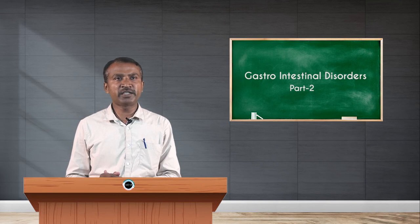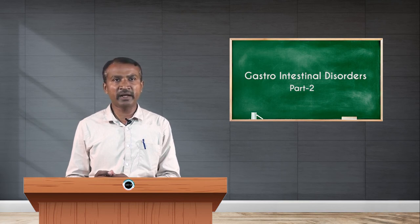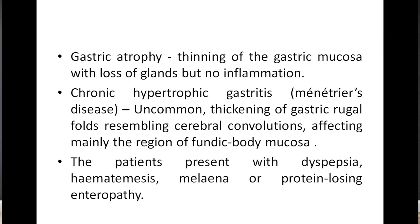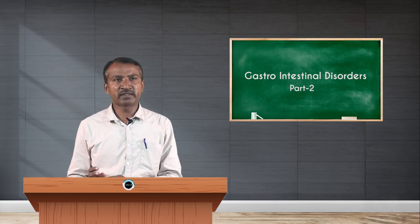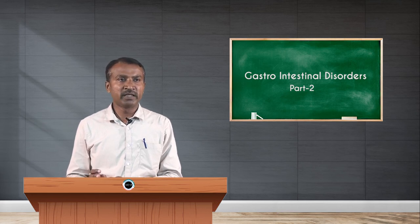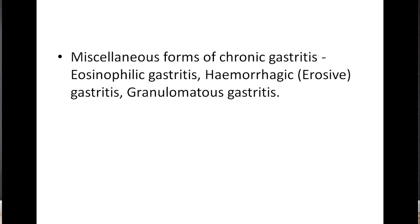H. pylori is a spiral-shaped bacterium. In chronic atrophic gastritis, inflammatory cells infiltrate the deep layer of the mucosa with atrophy of epithelial elements including destruction of the glands; metaplasia is commonly associated. Gastric atrophy involves thinning of the gastric mucosa with loss of glands but no inflammation. Chronic hypertrophic gastritis is uncommon, with thickening of gastric rugal folds resembling cerebral convolutions, mainly affecting the fundic body region. Patients present with dyspepsia, hematemesis, melena, or protein-losing enteropathy.